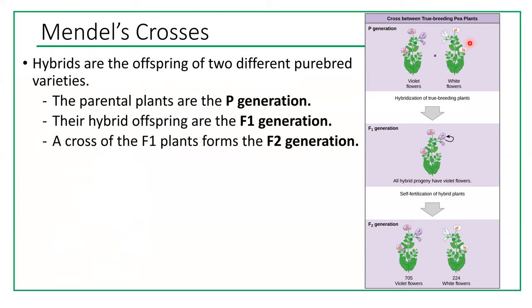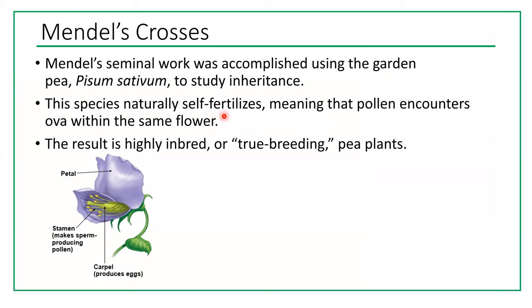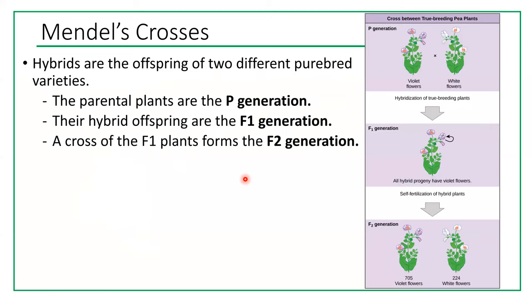For example, a plant with white flowers — the P generation was also formed by self-fertilizing, where pollen from the same flower fertilizes the ovum within the same flower. When you cross true-breeding pea plants you get the F1 generation, which is a hybrid between two parents. If you then cross F1 generation plants with each other, you get the F2 generation.